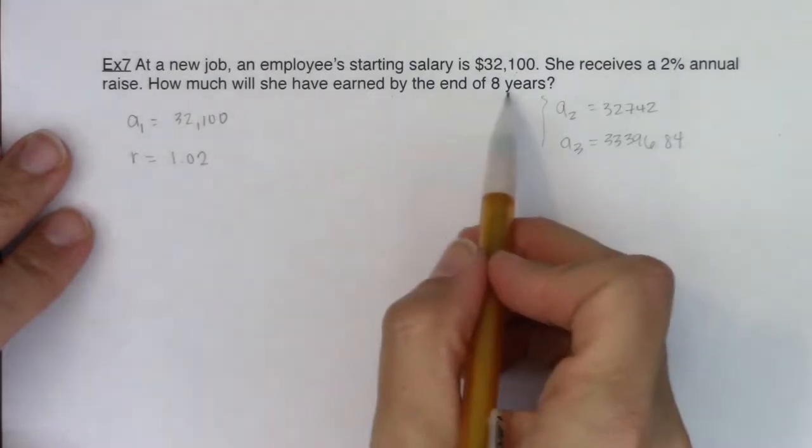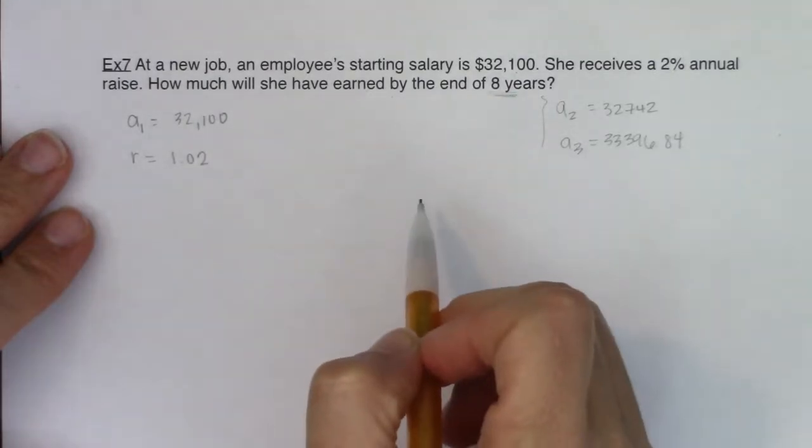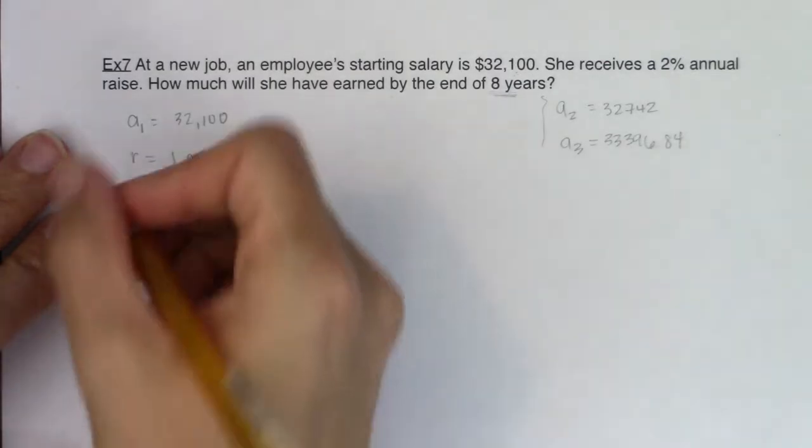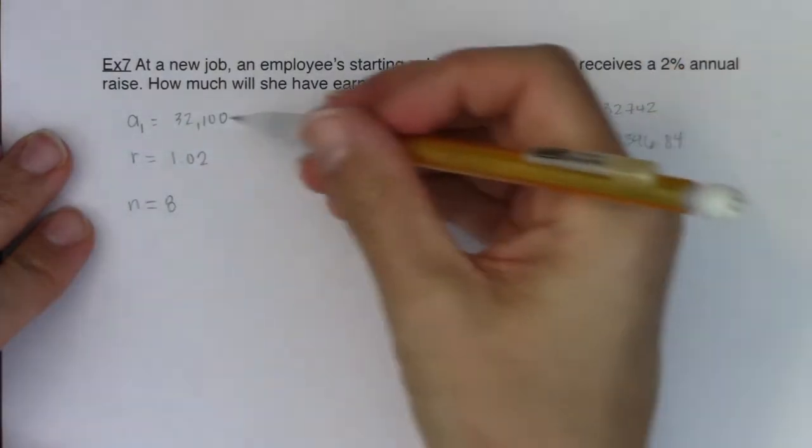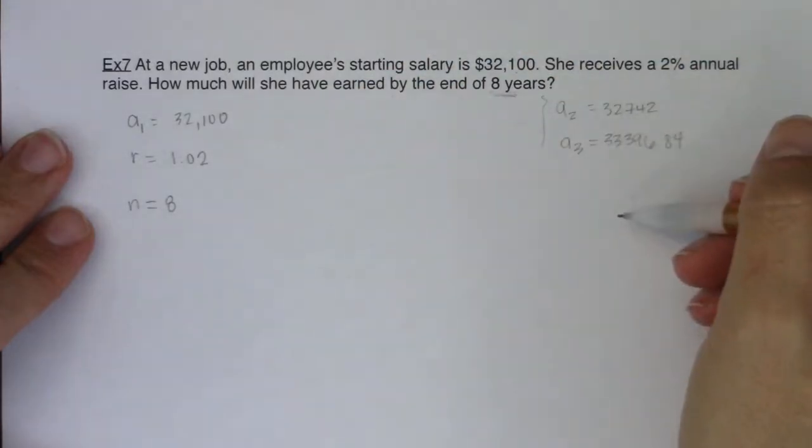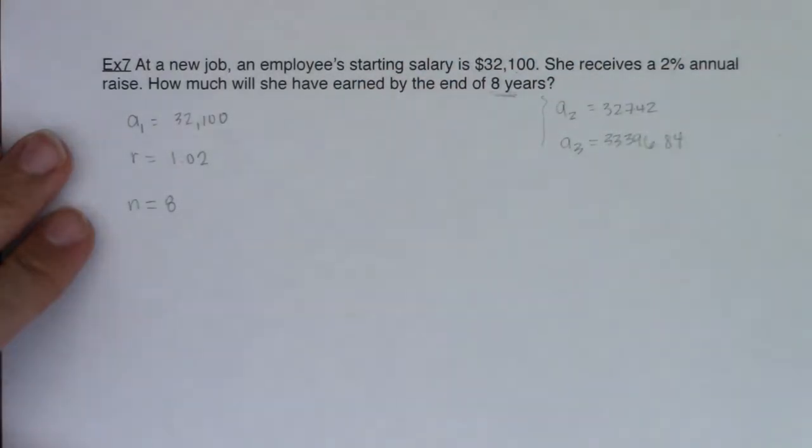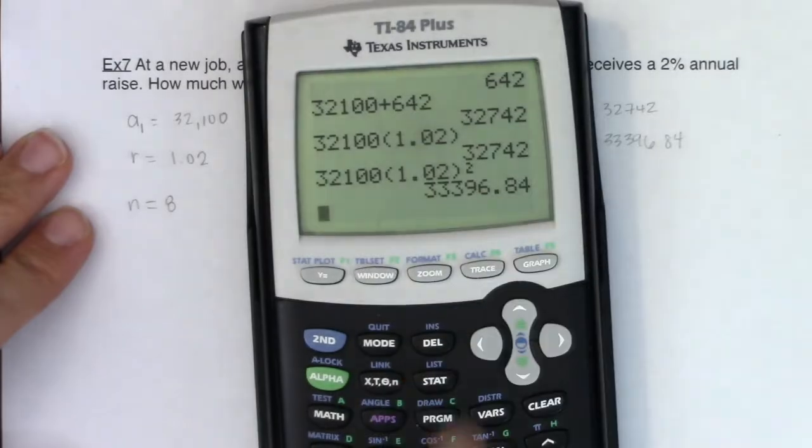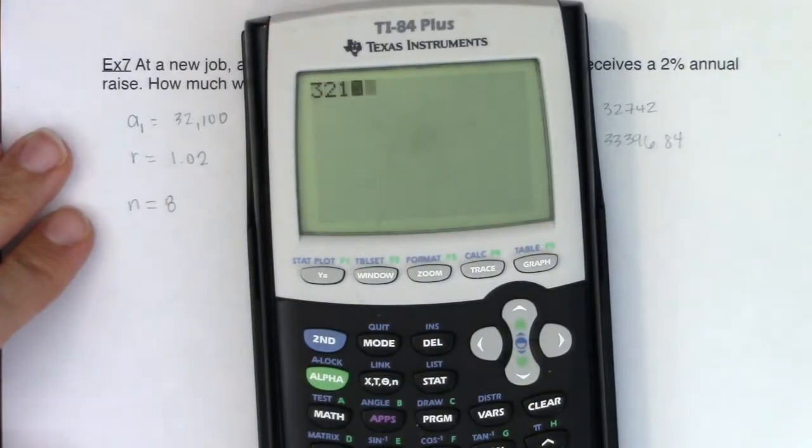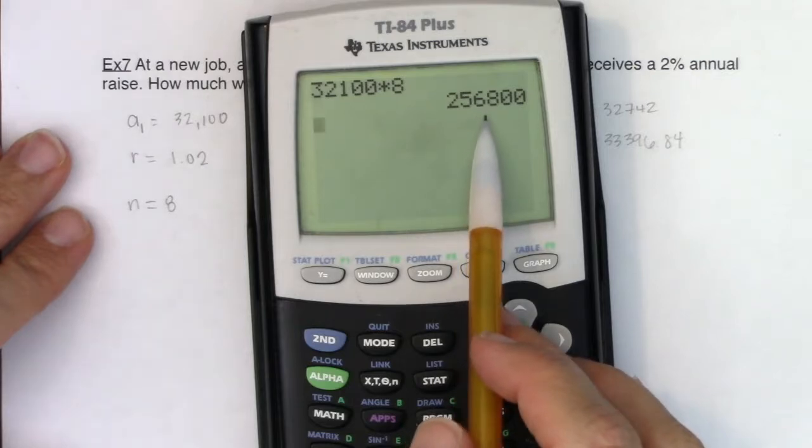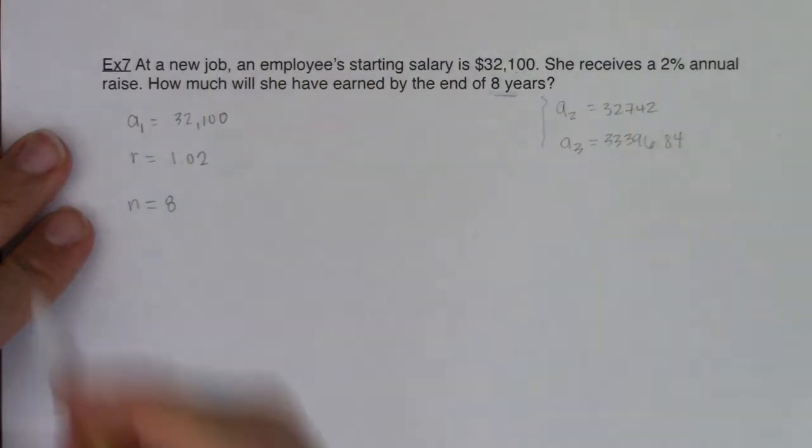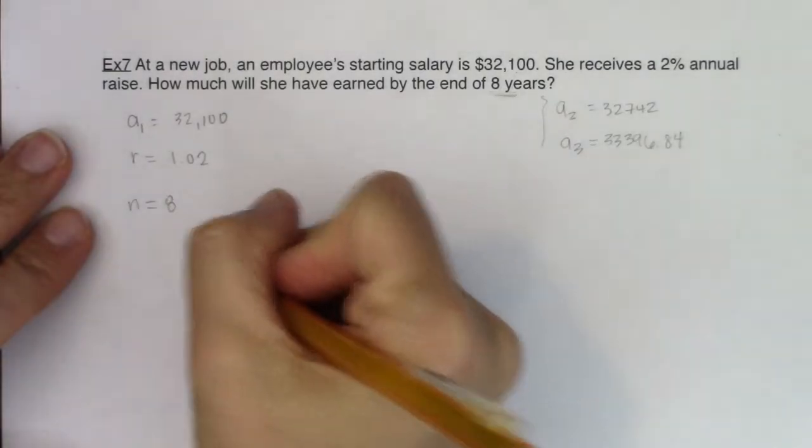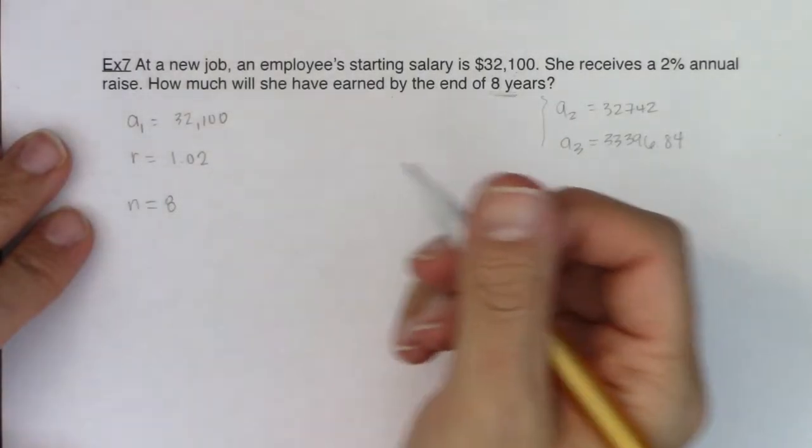And ultimately, they want the total amount of money she's earned at the end of eight years. So I want N to be equal to eight. I want to add up her first eight years of salaries and see what I get. And just to remind you, we said if she was getting no raise, if she was getting the same salary all eight years, it would have been $256,800. So now let's use our geometric series formula.